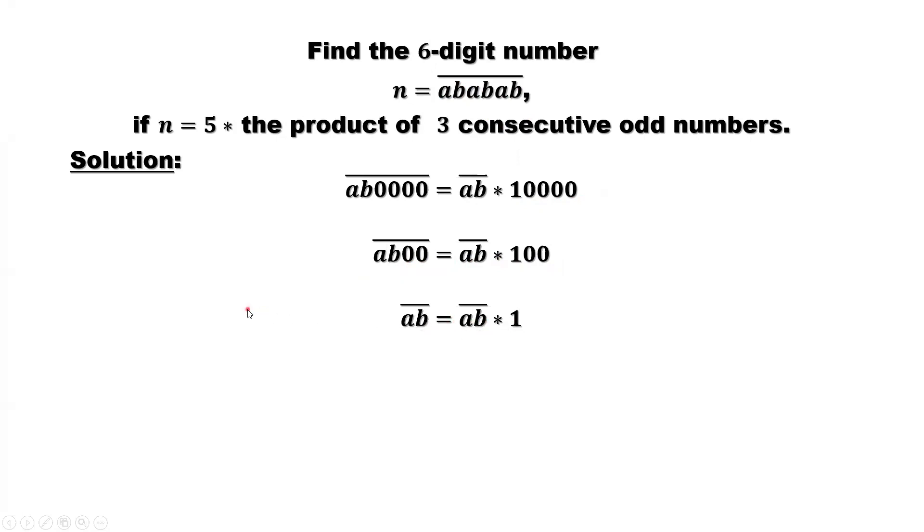So here, N equals ABABAB equals the sum of those three pieces. The left-hand side, we can sum the right-hand side. So each of those three have AB. We can factor AB out. You can see that's AB. Then we have 10,000 plus 100 plus 1, which equals 10,101.